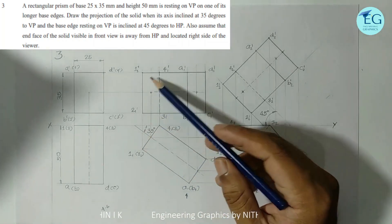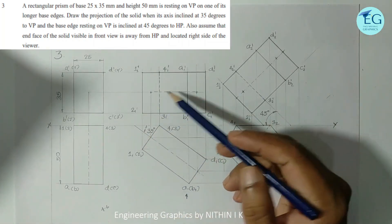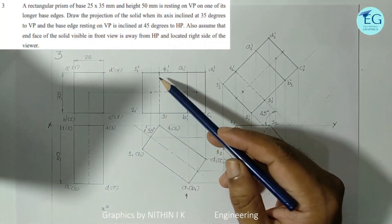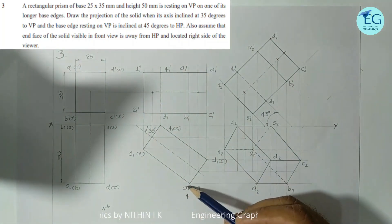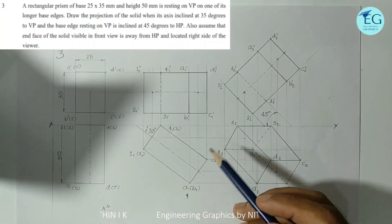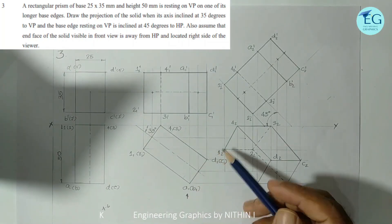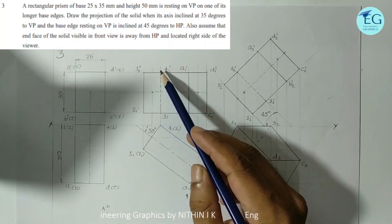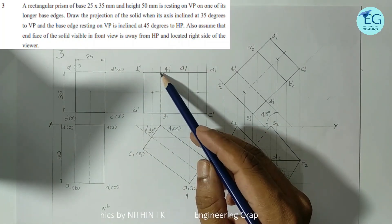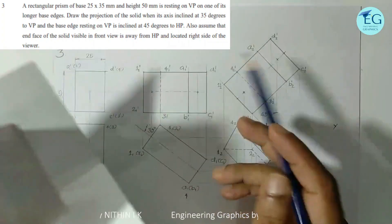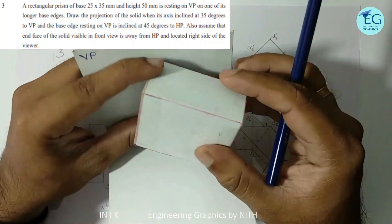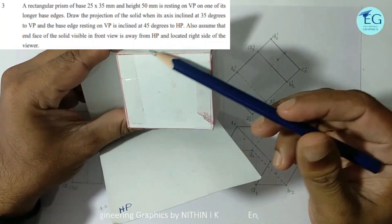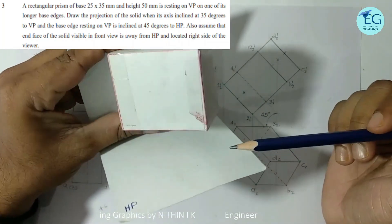For the second front view, the line 4-3-1 is an invisible line. The visible base is labeled A, B, C, D — these are visible. Points 1, 2, 3, 4 are invisible. That boundary is invisible. The edge 4-3 is invisible. The other edges are visible. This accounts for the 6 to 7 marks for visible and invisible lines.